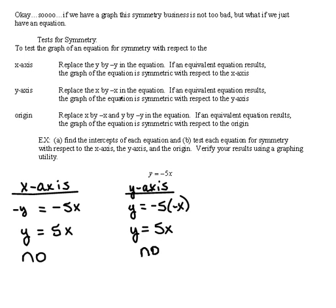Now our final symmetry is origin, so we're going to try it now. Our definition says for origin symmetry we replace x with -x and y with -y. If we get the same equation, if an equivalent equation results, then we have origin symmetry. So this time...